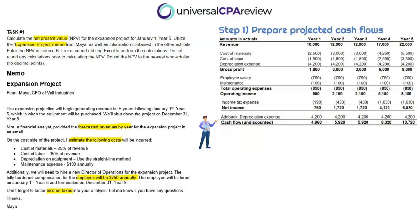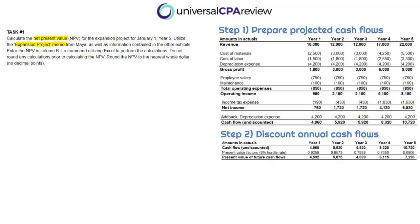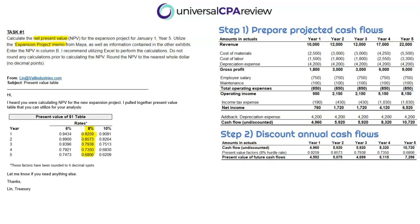Step one is now complete, but these cash flows are undiscounted, so this is not the final answer. Step two is where we discount those future cash flows from operations, because cash flow in year five is in future dollars and we need it in today's dollars — a dollar today is worth more than a dollar in the future. We pull up the present value factors table, which provides rates of 6%, 8%, and 10%. Since the hurdle rate is 8%, we use the 8% column for years one through five. We multiply each undiscounted cash flow by the corresponding present value factor to get the present value of future cash flows.